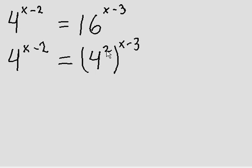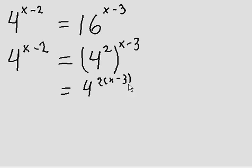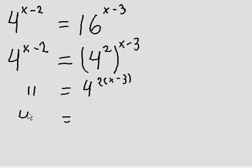Now, every time that we have an exponent to an exponent, we're going to have to multiply them. And this is what will happen — we're going to have 2 bracket x minus 3. The same applies on this side as well. And now we can actually expand, just copying it down to make more sense.